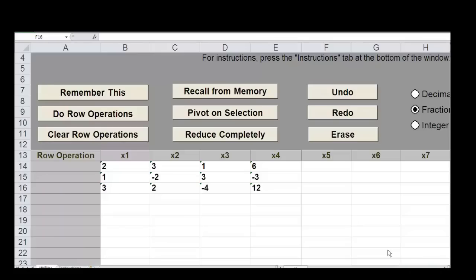This video will demonstrate the use of the Excel Pivot spreadsheet for using Gauss-Jordan reduction to reduce an augmented matrix such that we can read off the solution of the associated system of linear equations. You'll notice that I have entered an augmented matrix.